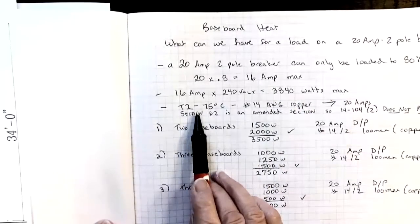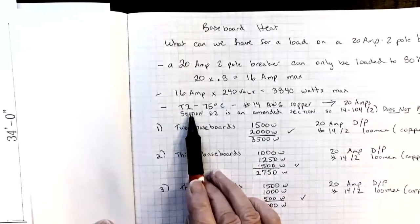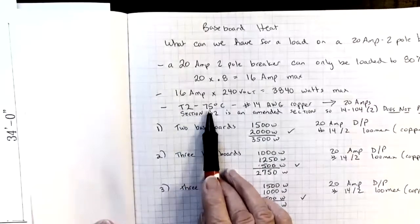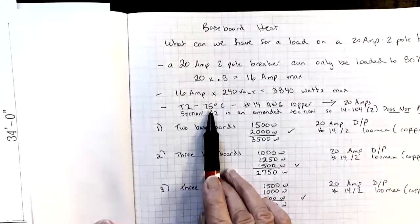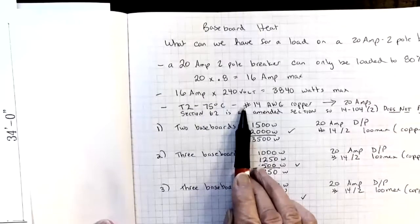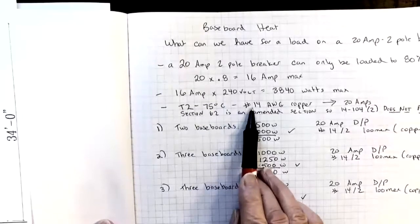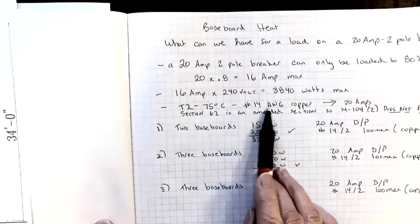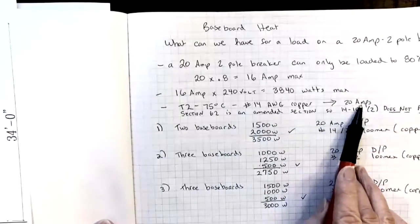The wire size that we would use on this 20 amp breaker comes from table two. And we're assuming that both the thermostat and the breaker and the baseboard heater all have a 75 degree terminal temperature rating. So table two 75 degree column tells us that number 14 AWG copper is good for 20 amps.